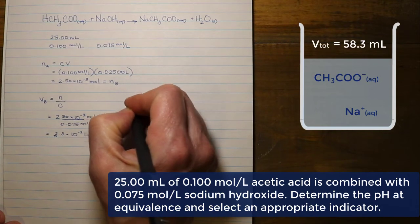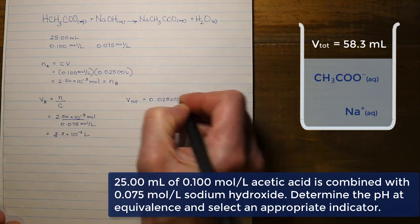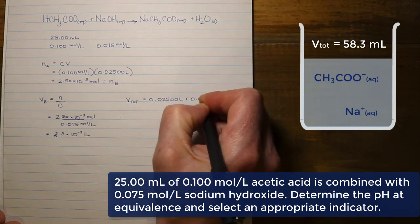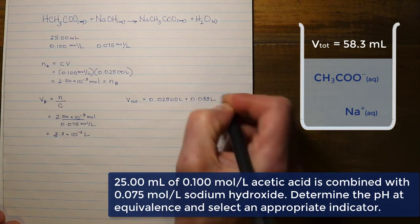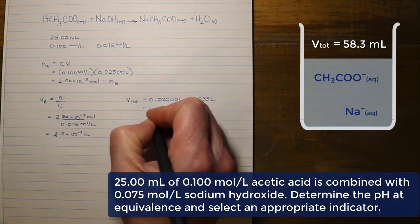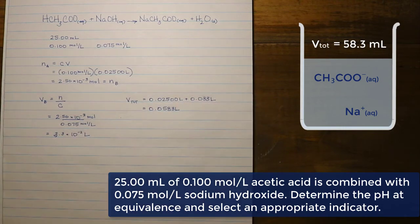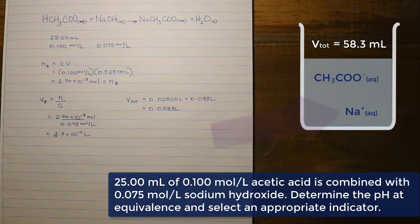The total volume of our reaction mixture is going to be the volume of the acid we had initially plus the volume of the base we just added. We need the total volume because the acid and base have completely reacted, and if one of the ions in solution is strong enough to impact pH, we need to know the concentration of that ion in the full reaction mixture — that is, the combined volumes of both solutions.